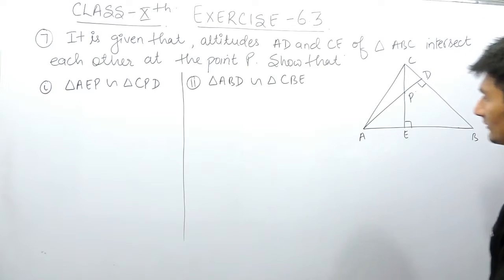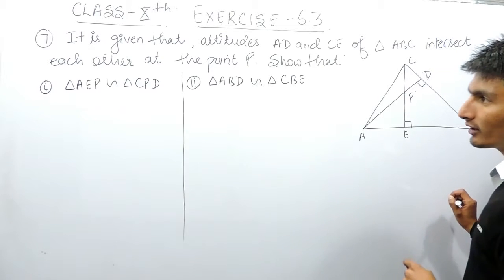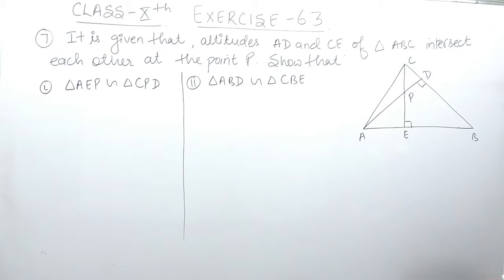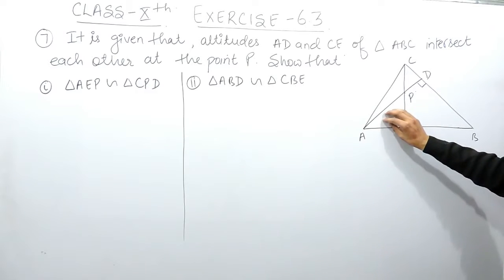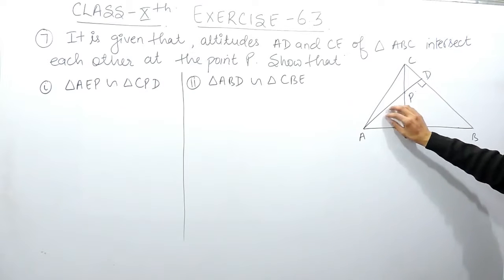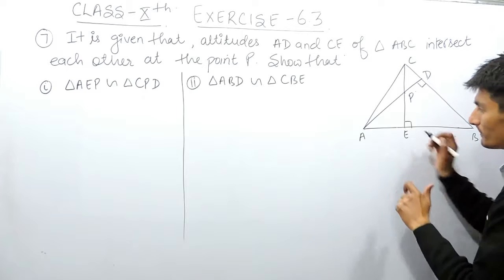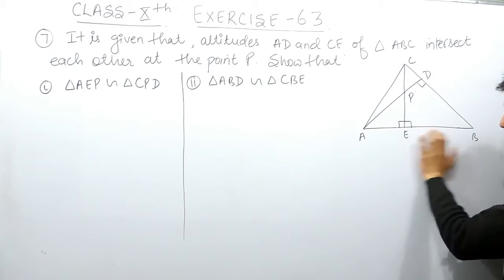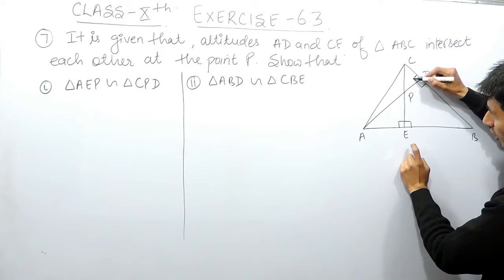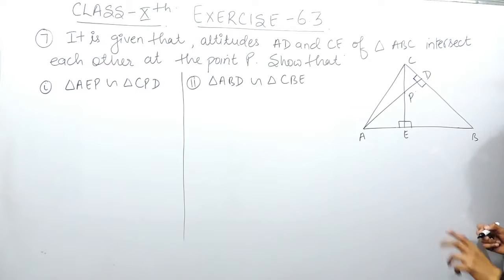First of all we have to prove that triangle AEP is similar to triangle CPD. To prove two triangles as similar, we have to prove that two angles of one triangle are equal to two angles of the other triangle. Since CE is a perpendicular, it forms 90 degrees with the base, so angle AEP is 90 degrees. Similarly, AD is a perpendicular, so angle PDC is also 90 degrees. So one angle in each triangle is 90 degrees.